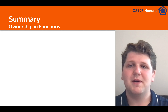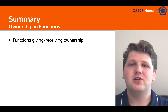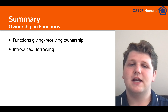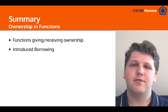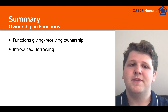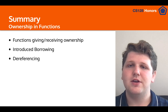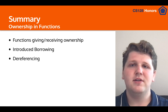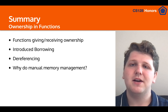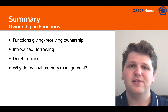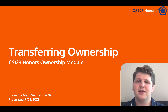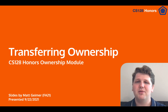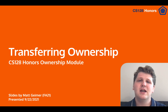In this lesson video we talked about ownership and functions — specifically how functions can give or receive ownership, and how we can borrow instead of transferring ownership so we don't have to return all variables all the time. We also talked about dereferencing to get underlying values of borrowed variables, and manual memory management and why Rust or C++ need it compared to Java. In the next lesson video, Eustace will give some examples of ownership and work through them, as well as talk about slices.